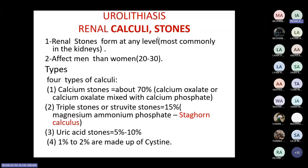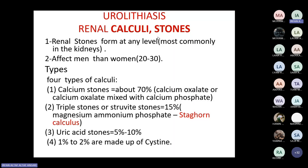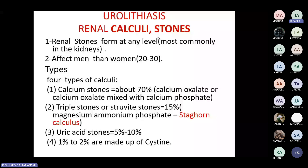There are four types of renal stones. The most common are calcium stones — formed by calcium oxalate or calcium oxalate mixed with calcium phosphate. Then the triple stone or struvite stone (15% of cases) formed by magnesium ammonium phosphate, also known as staghorn calculus because it takes the shape of the renal anatomy resembling the horn of a stag. Then uric acid stone, and the least common is cysteine stone.